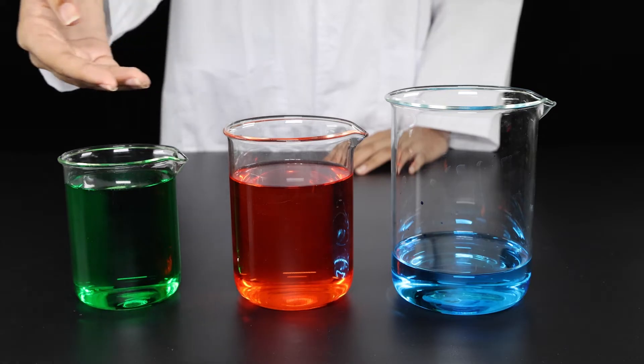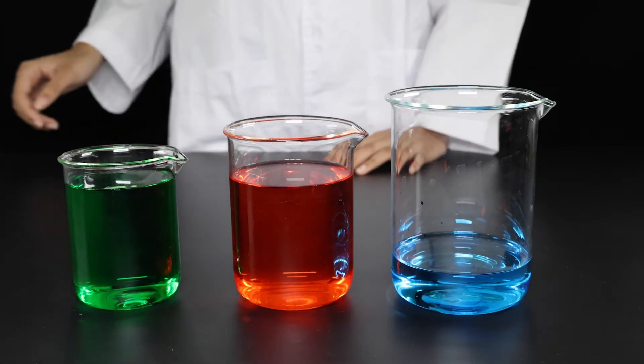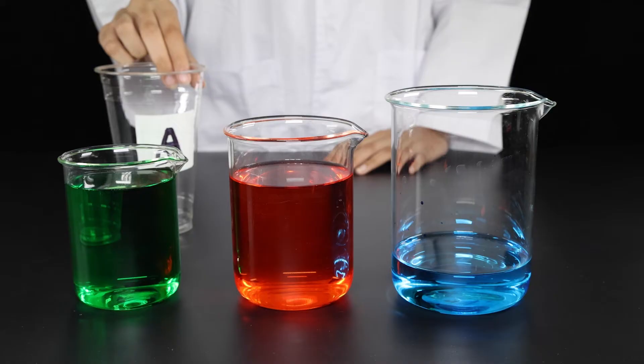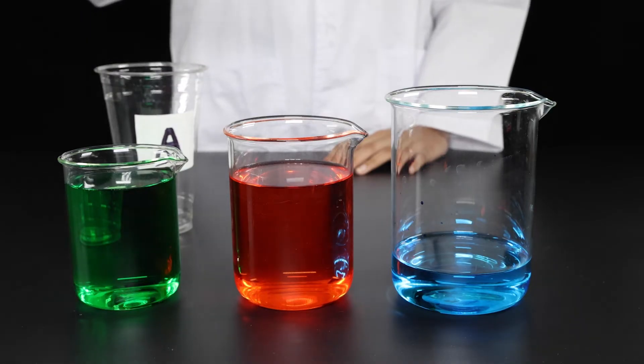Here, there are three different beakers of water. The amount of space the water in each beaker takes up is called its volume.